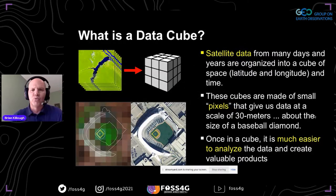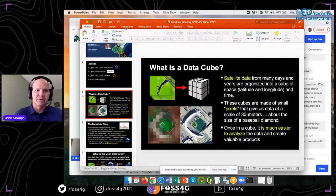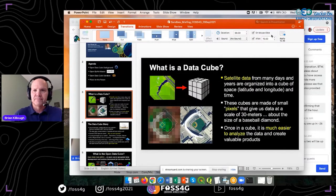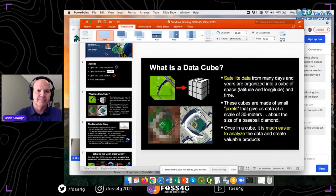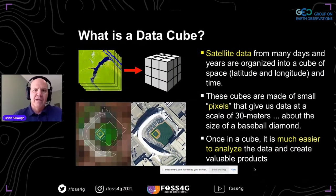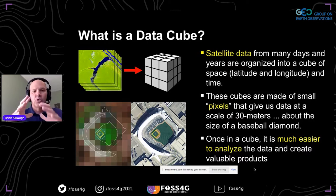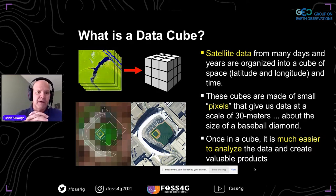First, I need to explain what we mean by a data cube. We traditionally think of satellite data organized across many days. We put them in a cube that has latitude, longitude, and time as its dimensions. All the pixels from the scenes you would typically download are organized in a database structure in latitude, longitude, and time — that's what we call a data cube. It makes it much easier to interrogate that data and utilize it in analyses.